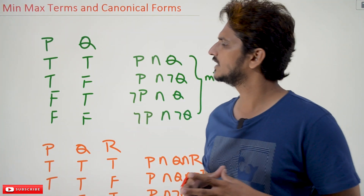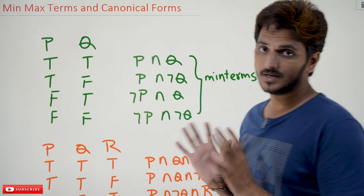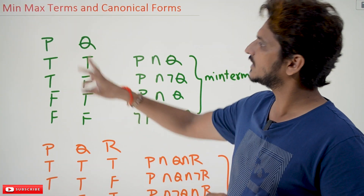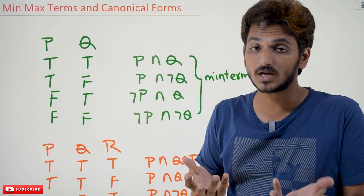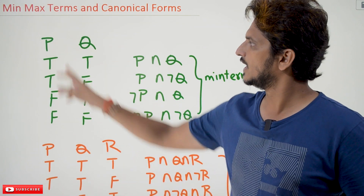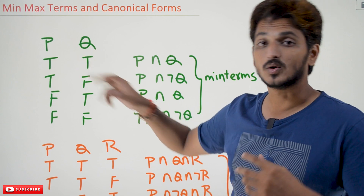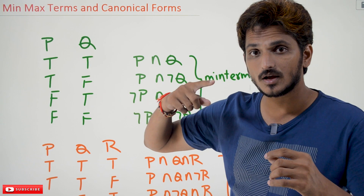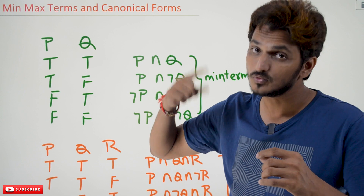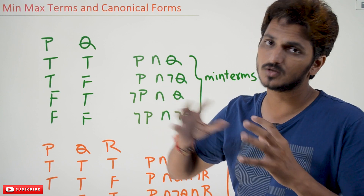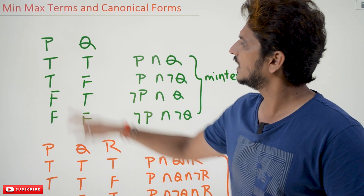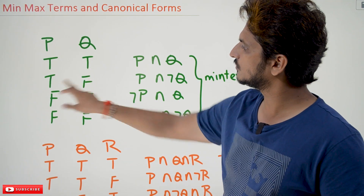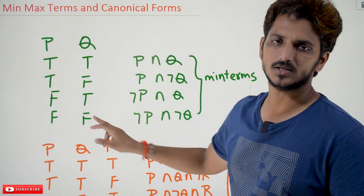Coming to today's class, let's try to understand what Min Terms means and how we write the Min Terms. Let's take two variables. If our proposition consists of two variables, P and Q, what are all the different truth value possibilities that we are going to write? These are all the four possibilities: true-true, true-false, false-true, false-false.